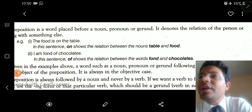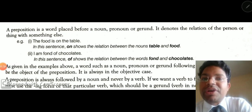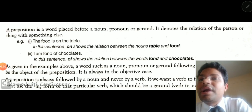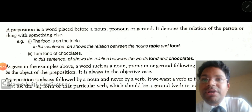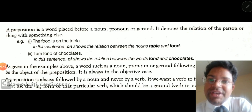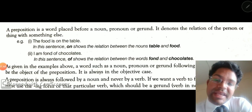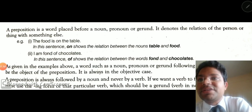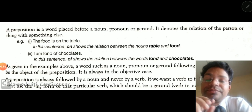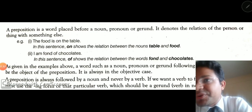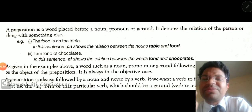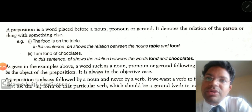So the meaning — here you can see on the screen the meaning is given. A preposition is a word placed before a noun, pronoun, or gerund. Gerund is also a kind of noun — it is a verb but in the sentence it works as a noun, that is why it can be placed after a preposition also. So a preposition is a word that is normally put before a noun, pronoun, or gerund.